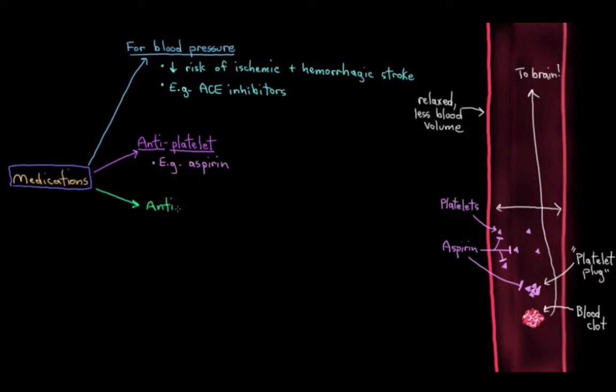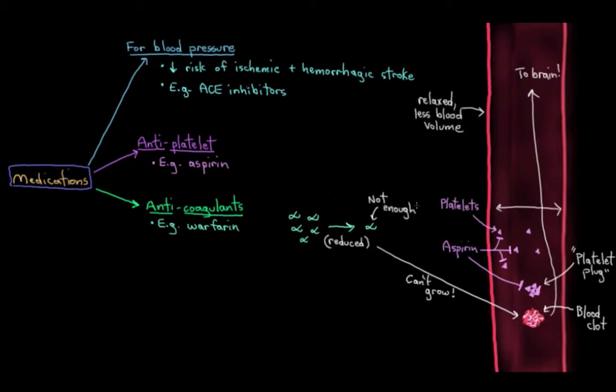Now, anticoagulants are a similar story to antiplatelets. You've probably heard of the most commonly used anticoagulant called warfarin. How these work is they interfere with and reduce production of certain proteins that are required to form blood clots. The result is that any existing clots can't really grow any bigger because the proteins aren't there, and new clots generally won't form very easily.